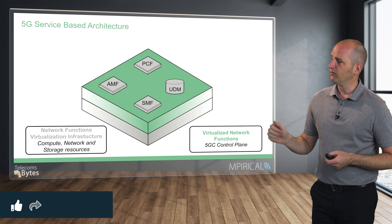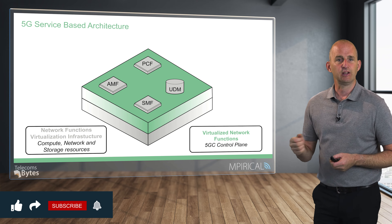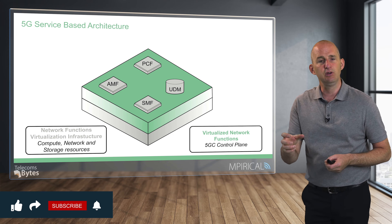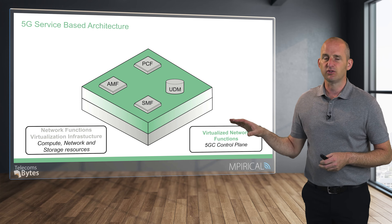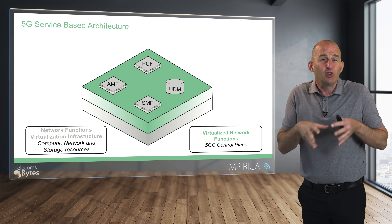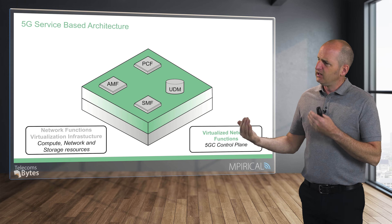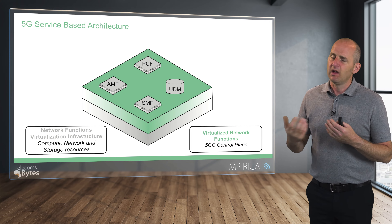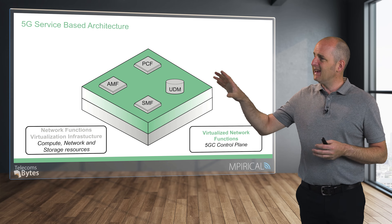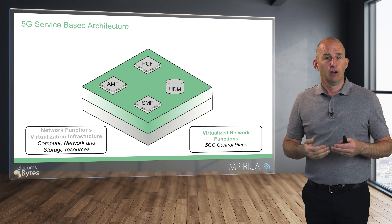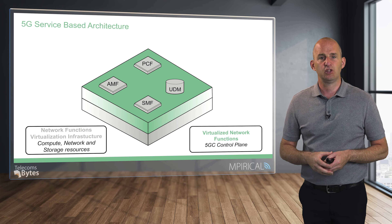And it's this cloud infrastructure that's responsible for providing all of the compute, the network, and indeed the storage resources that they need. They all share access to these resources, and we need some kind of mediation layer to make sure that the different network functions have got enough resources for them to do their job.